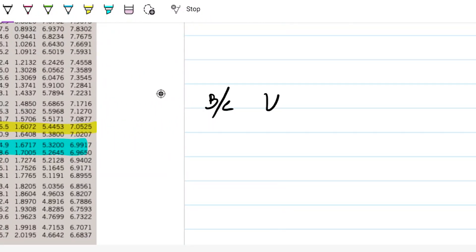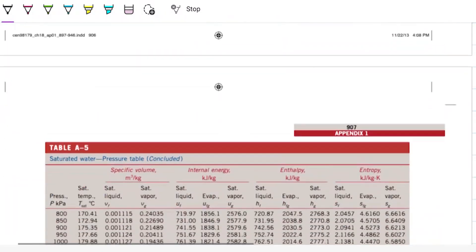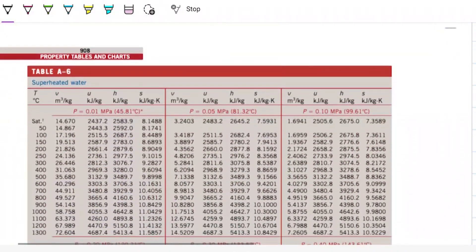because my specific volume three is greater than specific volume of the saturated vapor, I have a superheated fluid. Therefore, I'm in the wrong table. So I'm going to scroll down and go all the way to the superheated one.